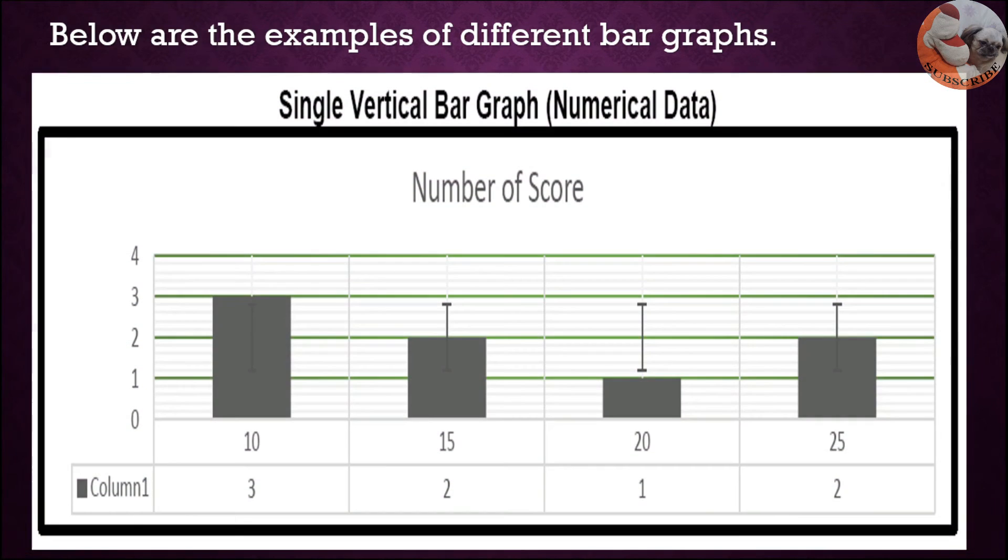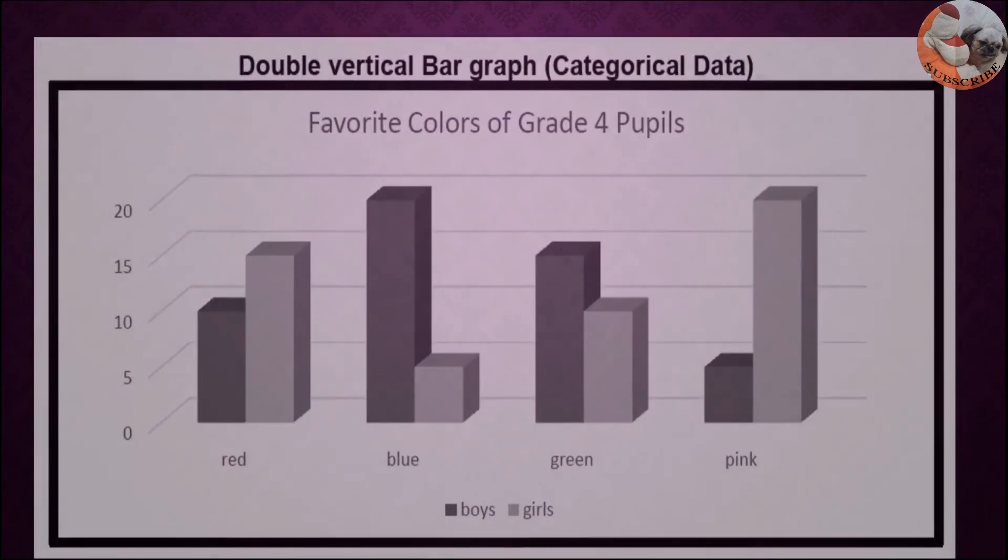Below are the examples of different bar graphs. First we have single vertical bar graph. Why is it a single vertical bar graph? As you can see there is only one bar in each numerical data, that is why it is called single vertical bar graph.